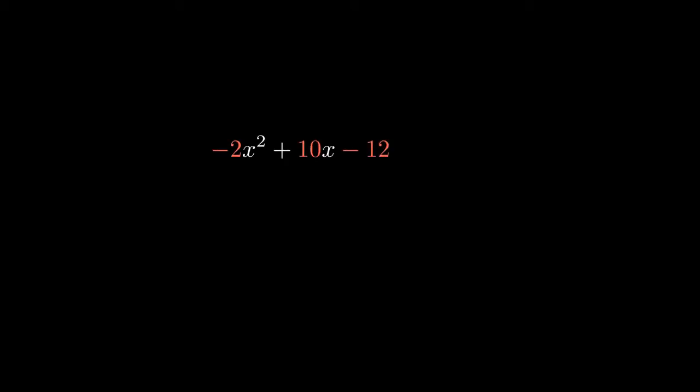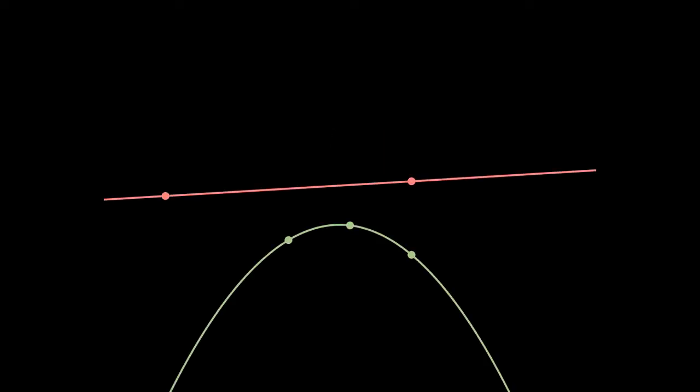So how do we represent polynomials? We've already seen two ways, collecting like terms and storing those coefficients, and storing the roots plus a constant multiplier. Both of these require storing n plus 1 numbers for a degree n polynomial. Note that there's nothing special about roots here. Just as any two points define a line, so too do any three points define a quadratic, any four points define a cubic, and so on and so forth. Any degree n polynomial is described by any n plus 1 points on it.